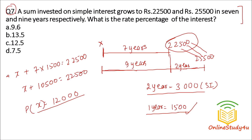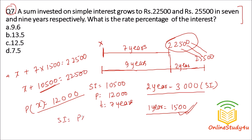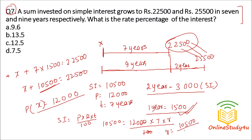We now know: principal is Rs. 12,000, simple interest over 7 years is Rs. 10,500, and time is 7 years. Using SI = (P × R × T) / 100: 10,500 = (12,000 × R × 7) / 100. So R equals 10,500 divided by 840, which is 12.5. Therefore the rate is 12.5% per annum.